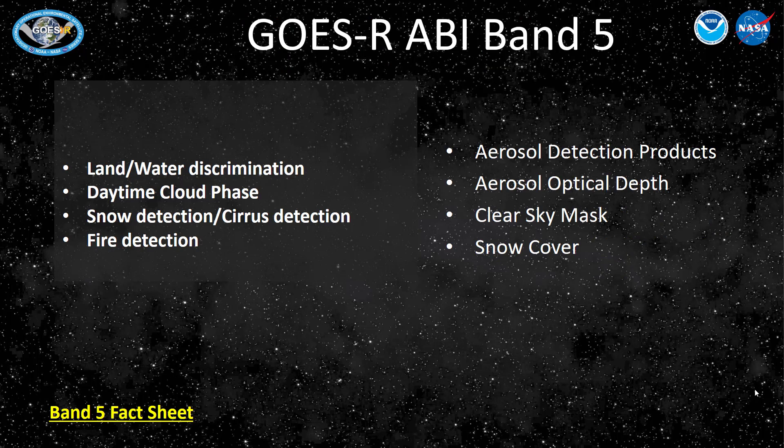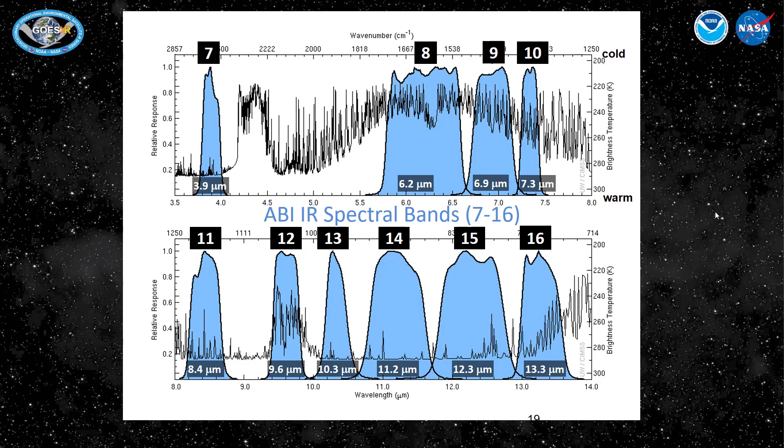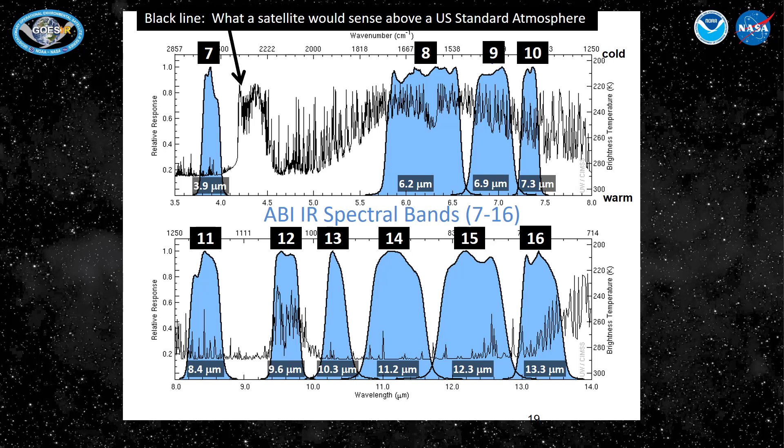Uses for this band are on the left, and Level 2 products that use the band are on the right. You can click the link to find a fact sheet. This chart shows where the 10 different infrared channels are detecting emitted radiation from the Earth. We'll be talking about band 7 at 3.9 micrometers, band 13 at 10.3 micrometers, and the three water vapor channels at bands 8, 9, and 10 at 6.2 to 7.3 micrometers.